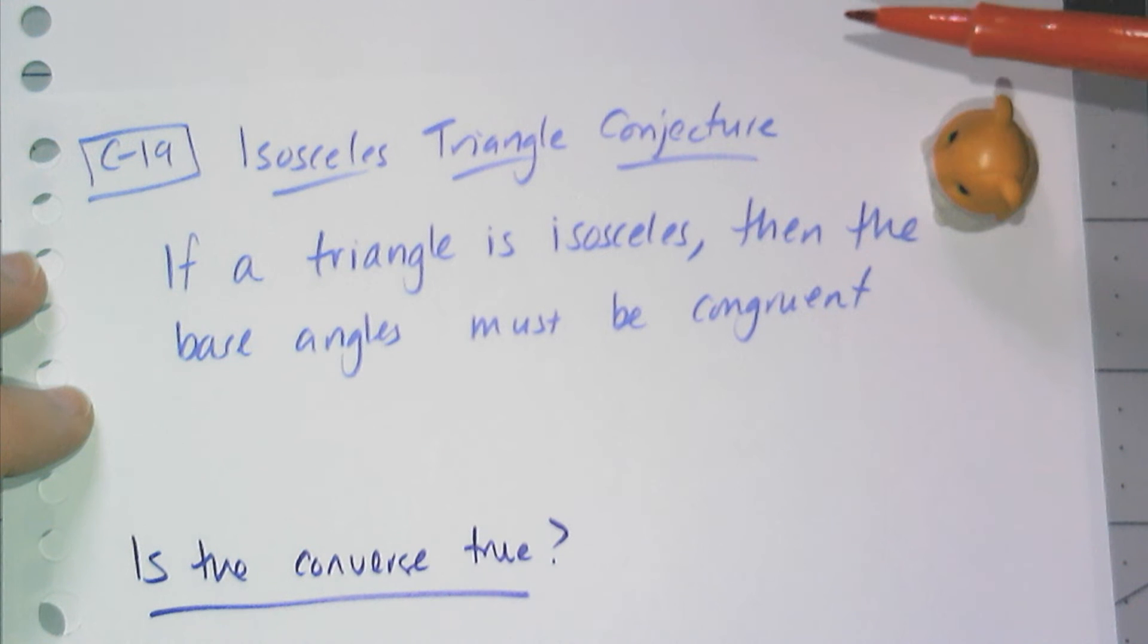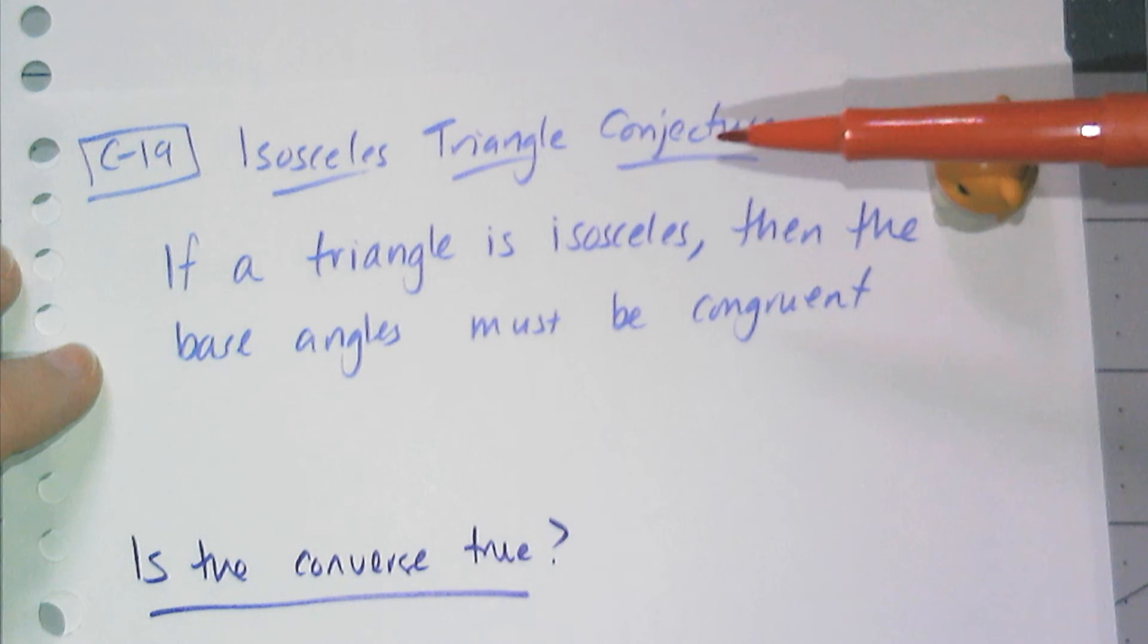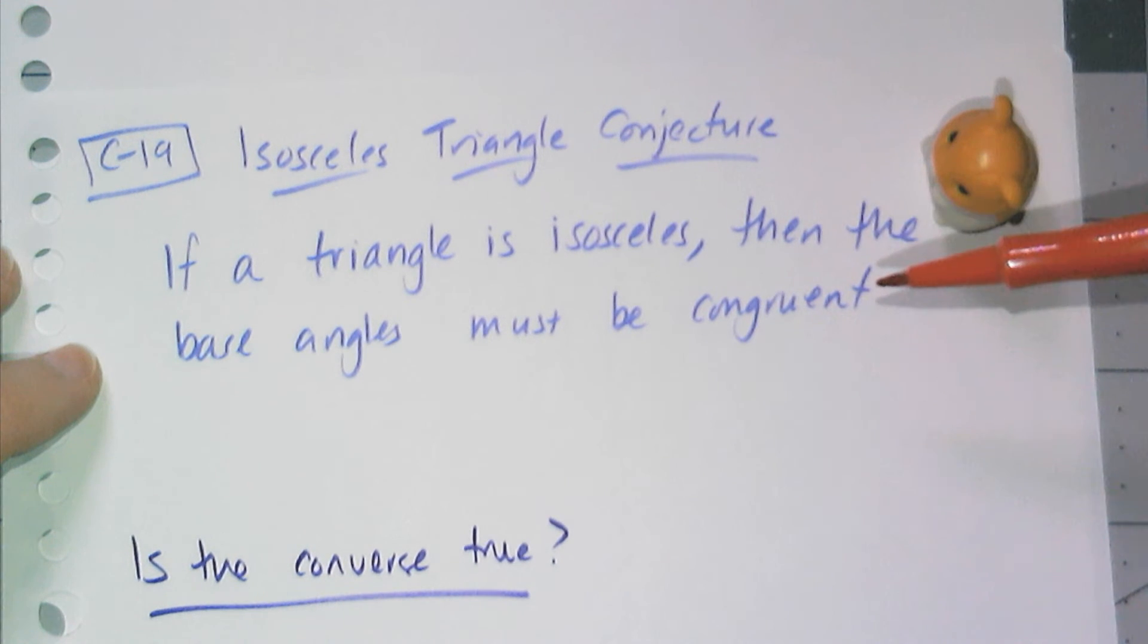Conjecture 19 is called the isosceles triangle conjecture. It says if a triangle is isosceles, then the two base angles must be congruent.